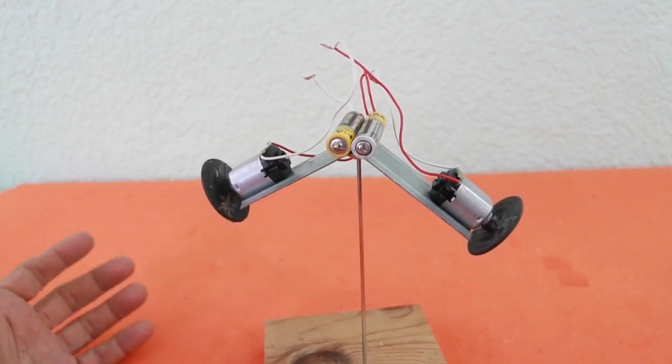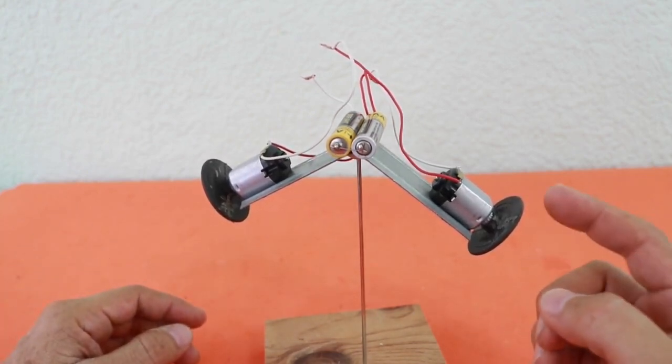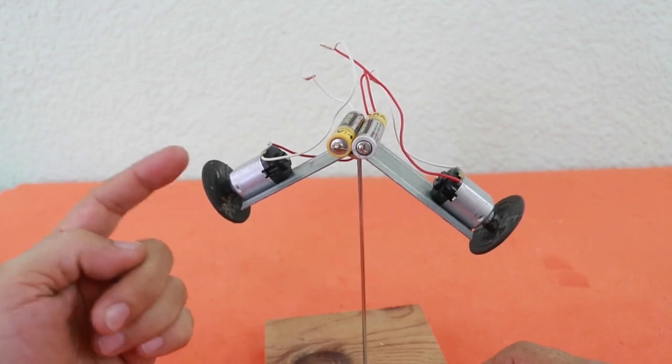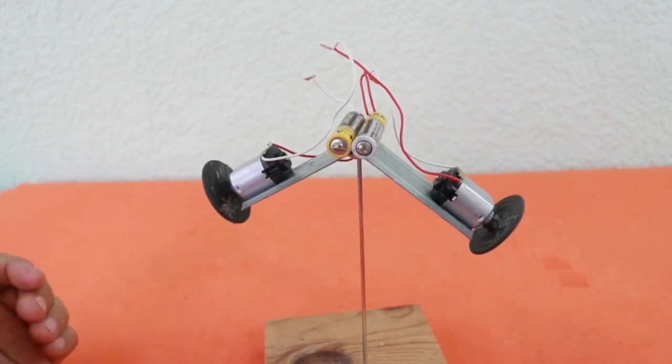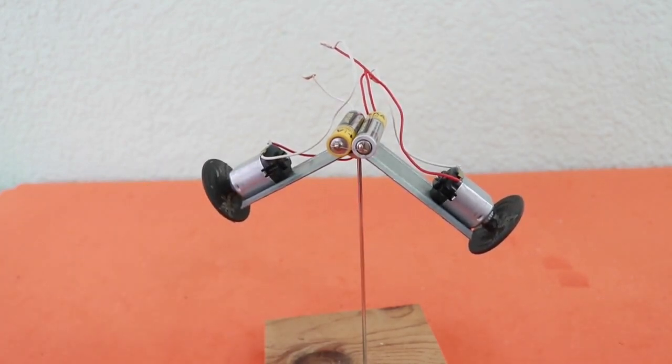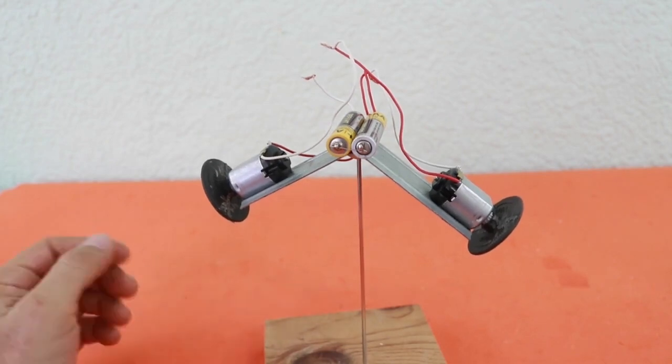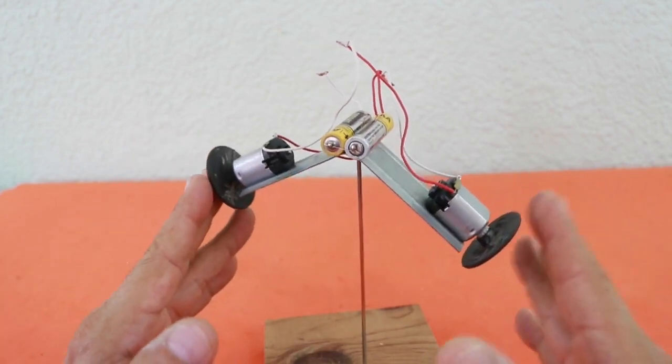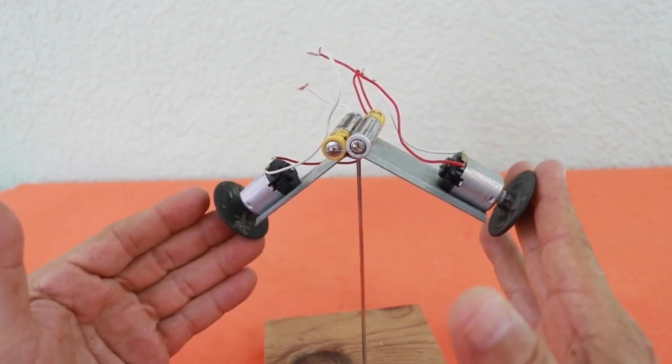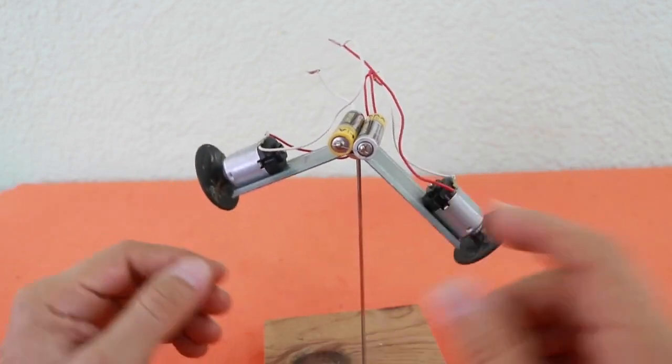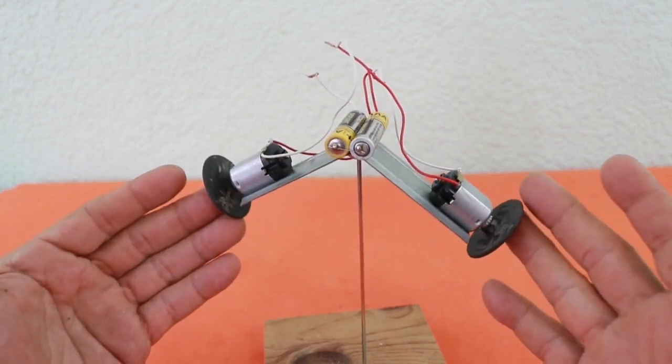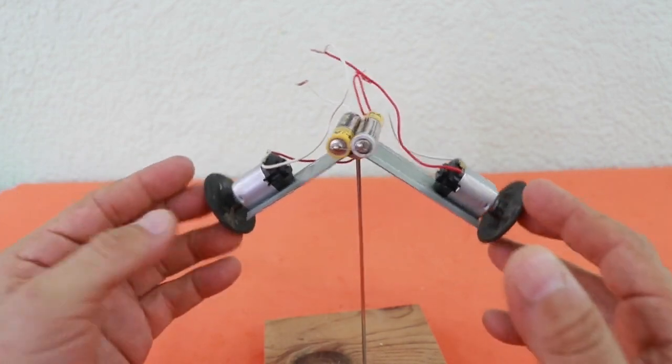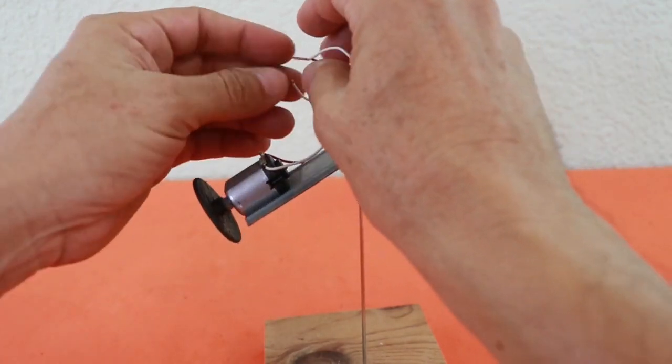And you may be wondering what happens if one motor goes in one direction and the other motor in the other direction. And I think you know what happens. It does not rotate because the precession of one motor cancels with that of the other. I have made the connections to make the motors run in different directions. And let's see the movement.